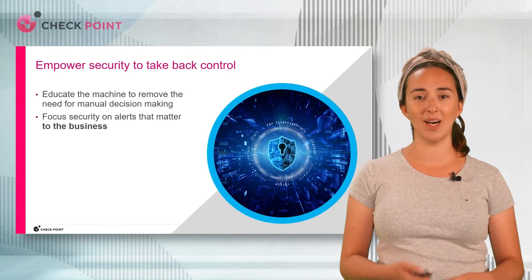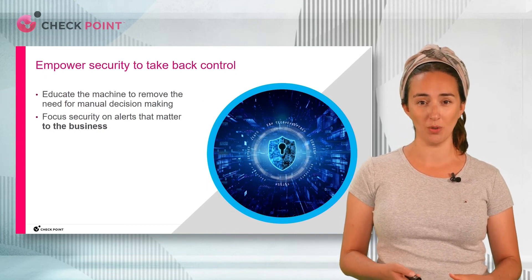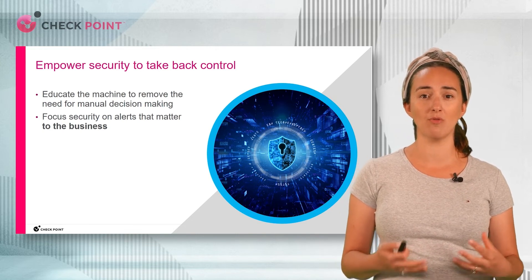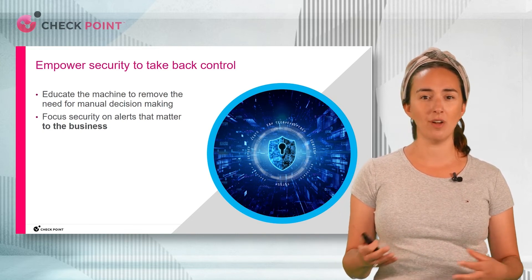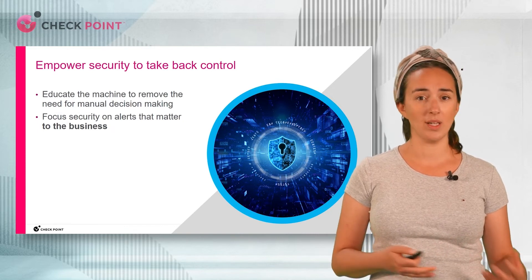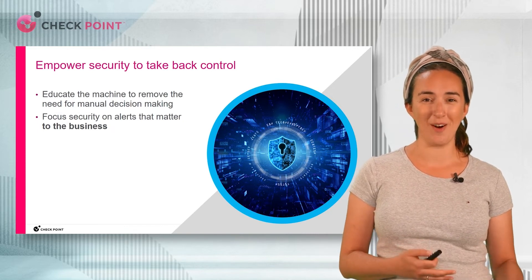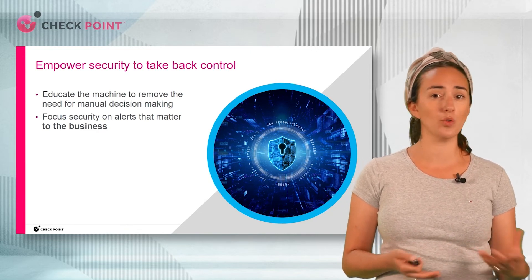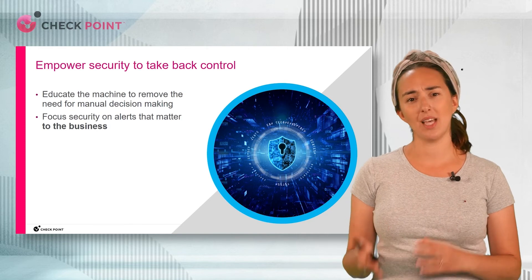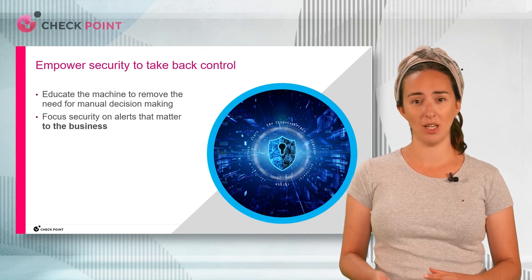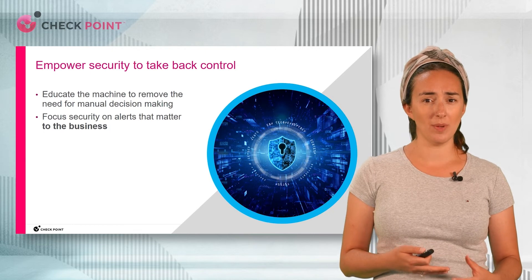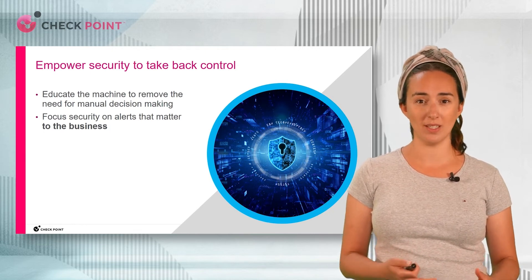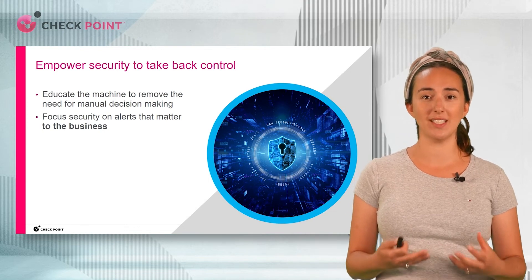At Checkpoint, we believe it's time for security to take back control. We're moving our customers away from manual decision making and focusing the machine on the risks that matter. Imagine a vulnerability like Log4J on two web servers — one in a production environment facing the internet that's also the cash cow for the organization, like the ordering application, and the second is a staging machine with the same vulnerability. You do want to deal with both, but clearly the vulnerability on the staging machine isn't as high a priority for your business, and that's how security is taking back control.